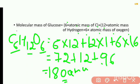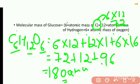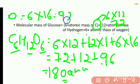Next, we have to find out the total amount of carbon. The total amount of carbon is the number of carbon atoms, which is 6, into the atomic mass of carbon, which is 12. Therefore the total amount of carbon will be 72. Similarly, the total amount of oxygen: number of oxygen atoms is 6, into atomic mass of oxygen which is 16, therefore the total amount of oxygen will be 96.